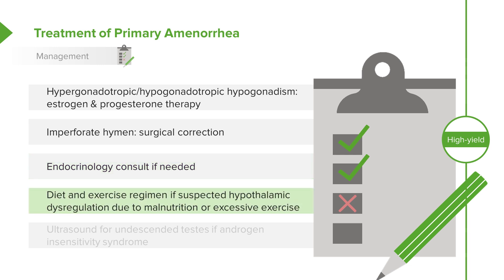We may consult an endocrinologist if we need help guiding the patient through puberty and development. Diet and exercise regimens may be important if we suspect hypothalamic dysregulation due to malnutrition or excessive exercise. In patients with eating disorders or those highly invested in athletics, changing dietary and exercise habits may be sufficient to bring on menses.